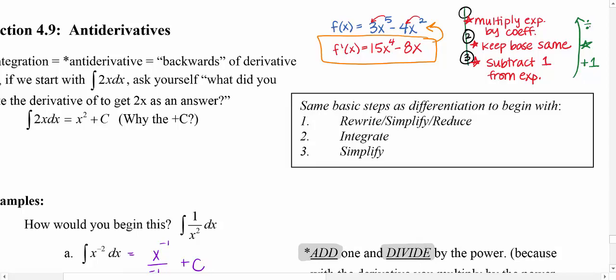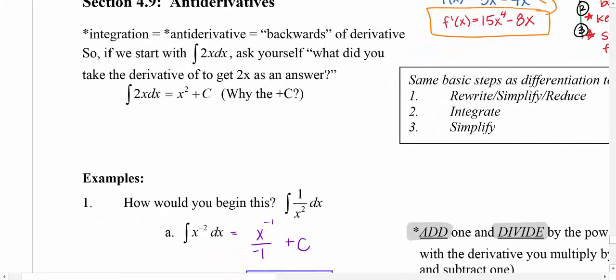I'm still going to keep the base the same. And then instead of multiplying the coefficient, we're going to divide by that exponent. So let's see what this looks like.